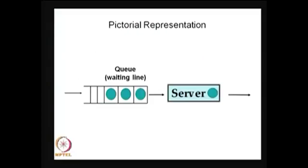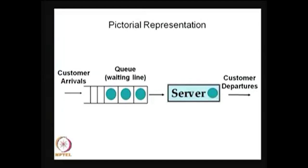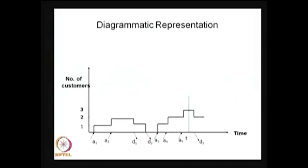We can represent the queuing system in a pictorial form. Some customers are coming into the system and waiting for their service; once the service is over, they depart from the system. This is the way one can visualize the queuing system in pictorial form. This is a diagrammatic representation where the x-axis is time and the y-axis is the number of customers in the system.